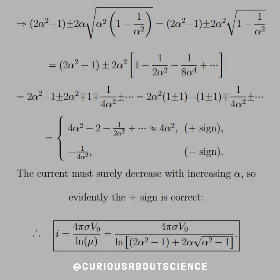So the current must surely decrease with increase in alpha, because alpha is going to get bigger, the separation is bigger, so the current needs to be dropping off. So evidently, the plus sign is the only one that is correct because as alpha gets bigger, it still converges to 4 over alpha squared, so the plus sign is it.